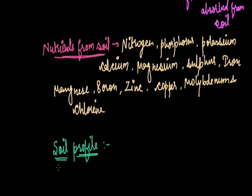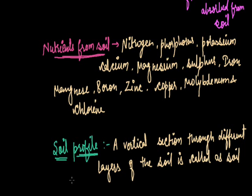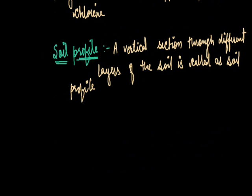A vertical section through different layers of the soil is called a soil profile. Each layer differs in feel, texture, color, depth, and chemical composition.